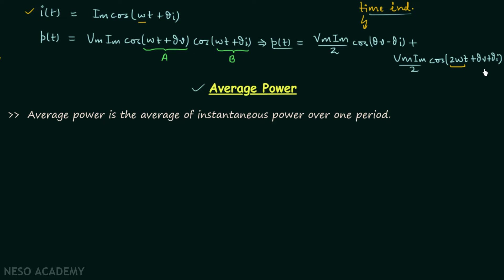That second term is the time-dependent term, and therefore we can say that the instantaneous power will depend on time. Hence it will be difficult to measure the instantaneous power because it will change with time.